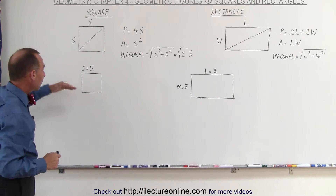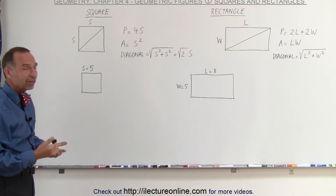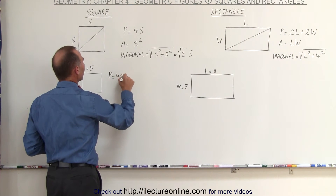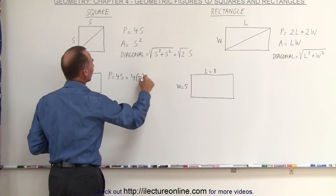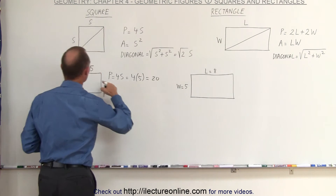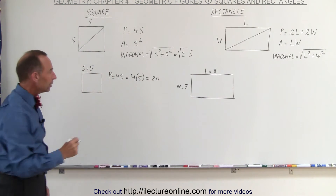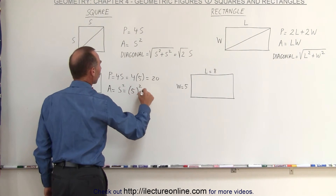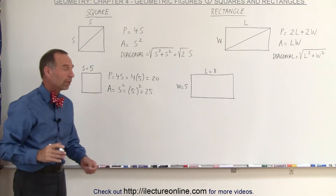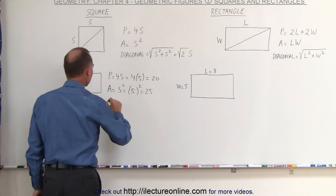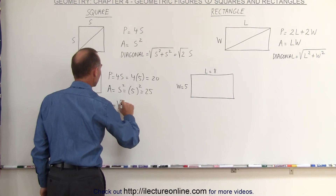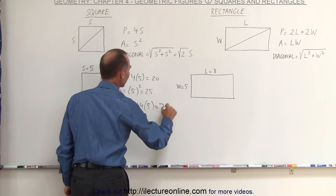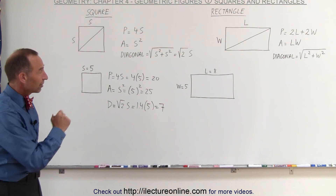Here we have a couple of examples. Let's say we have a square with a side equal to 5. The perimeter equals four times the side, which is four times 5, equal to 20. The area equals the side squared, which is 5 squared or 25 square units. To find the diagonal, it equals the square root of two times the side, approximately 1.4 times 5, which is equal to 7.